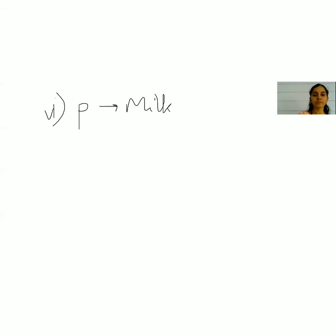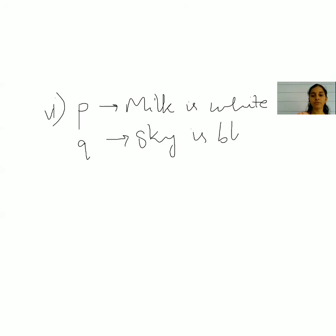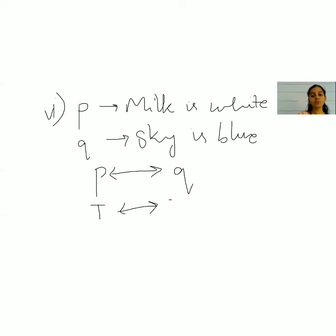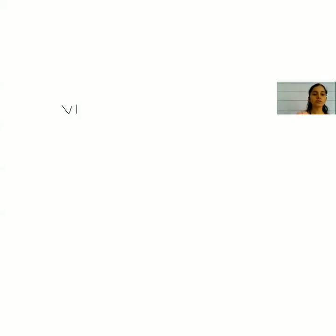The sixth one: milk is white if and only if sky is blue. 'Milk is white' is p — truth value is true. 'Sky is blue' is q — truth value is true. The biconditional of true and true is true. The biconditional is easier to remember: if both values are the same, the truth value is true; if they differ, it is false.